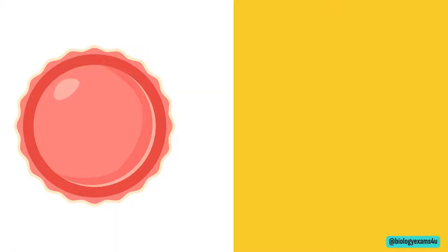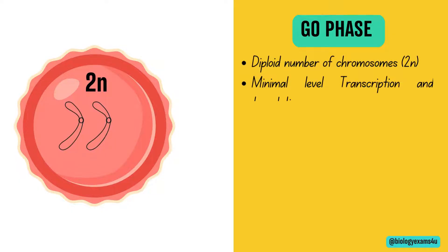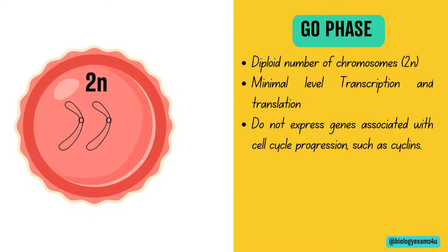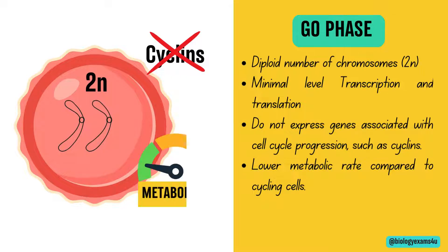Now let us discuss the characteristics of cells in G0 phase. Cells in G0 have a diploid number of chromosomes and are not actively replicating DNA. Transcription and translation still occur in G0 cells, allowing them to maintain basic cellular functions. These cells do not express genes associated with cell cycle progression, such as cyclins. Cells in G0 have a lower metabolic rate compared to cycling or dividing cells.